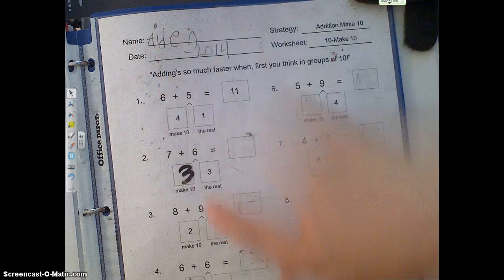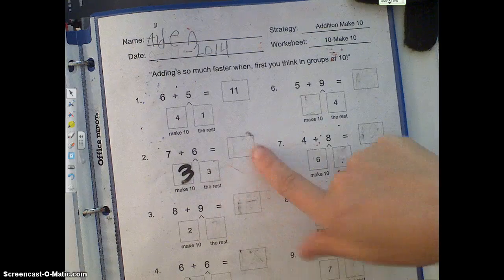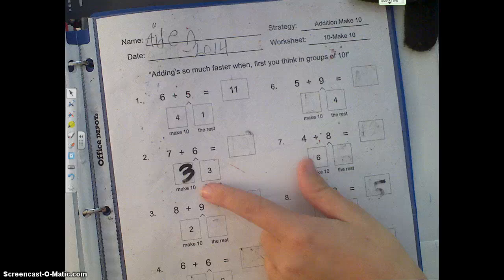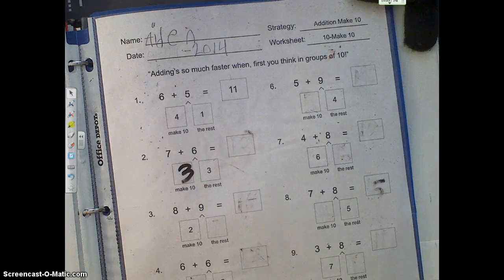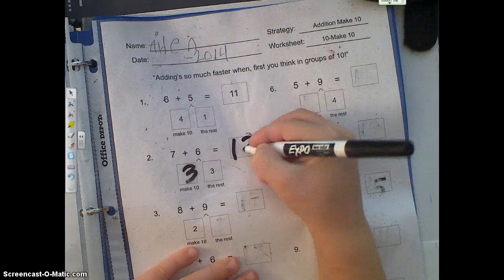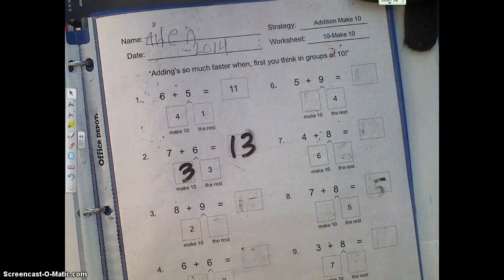So 7 plus 3 is 10, plus 3 is what? 10 plus 3 is 13, so put 13 right there. Does that make sense? Okay.